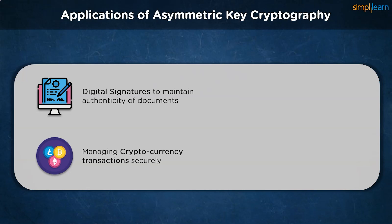In blockchain architecture, asymmetric key cryptography is used to authorize transactions and maintain the system. Thanks to its two-key structure, changes are reflected across the blockchain's peer-to-peer network only if approved from both ends. Along with asymmetric key cryptography's tamper-proof architecture, its non-repudiation characteristic also helps in keeping the network stable.